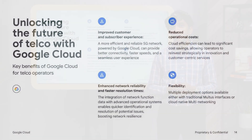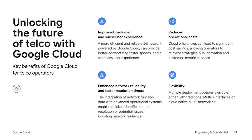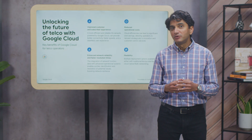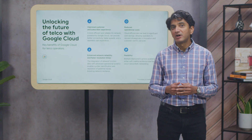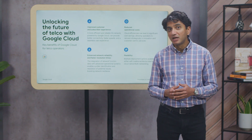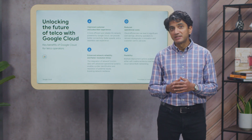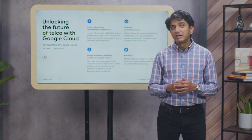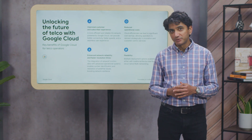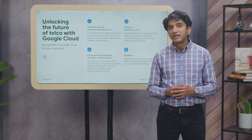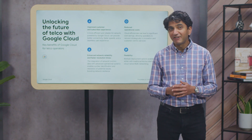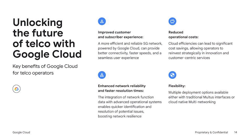Secondly, you will see reduced operational costs. The inherent efficiencies of cloud-native operations and the automation capabilities lead to significant cost savings by avoiding traditional routing and leveraging cloud-native constructs. Your networks are greatly simplified. This frees up valuable capital and operational budget, allowing you to strategically invest in innovation, develop new customer-centric services, and drive differentiation. Thirdly, you can enhance network reliability and faster resolution times. This proactive approach boosts network resilience, minimizes downtime, and maintains service quality crucial for your SLAs.